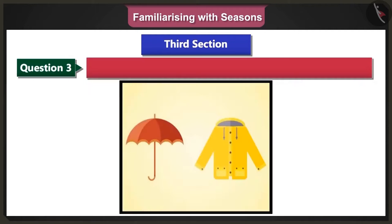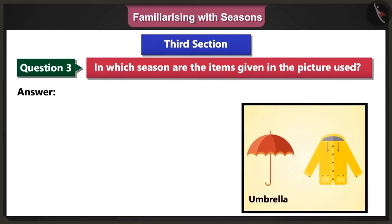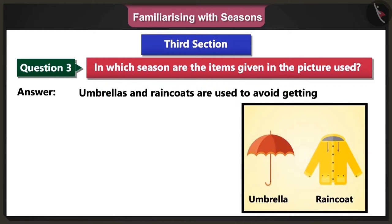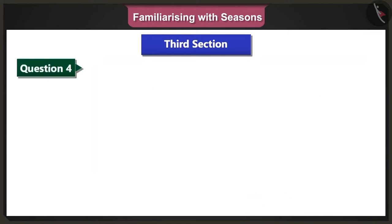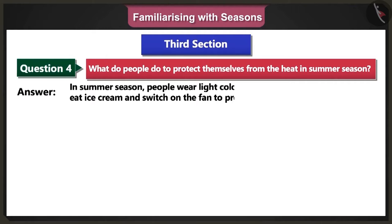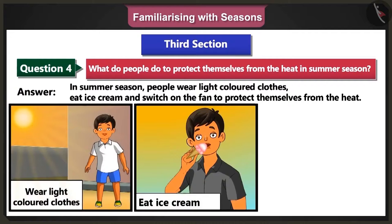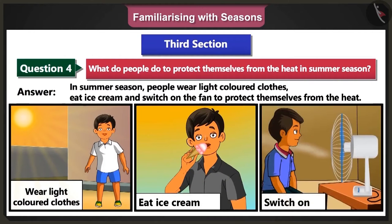Third question: In which season are the items given in the picture used? Umbrellas and raincoats are used to avoid getting wet during the monsoon season. Fourth question: What do people do to protect themselves from the heat in summer season? In summer season, people wear light-coloured clothes, eat ice cream and switch on the fan to protect themselves from the heat.